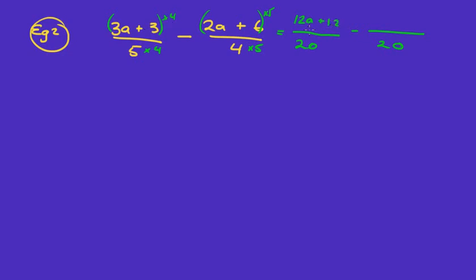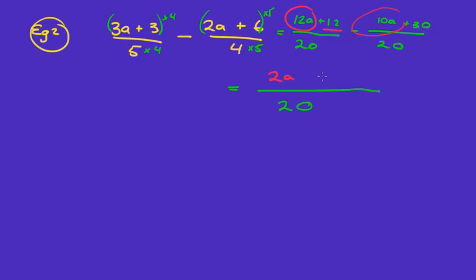The next part: two a times five is ten a, and six times five is thirty. Now we simplify over our common denominator of twenty. This minus sign works on both the ten a and the thirty, so we get twelve a minus ten a minus thirty. Be careful there — twelve a minus ten a gives two a, and twelve minus thirty gives minus eighteen.